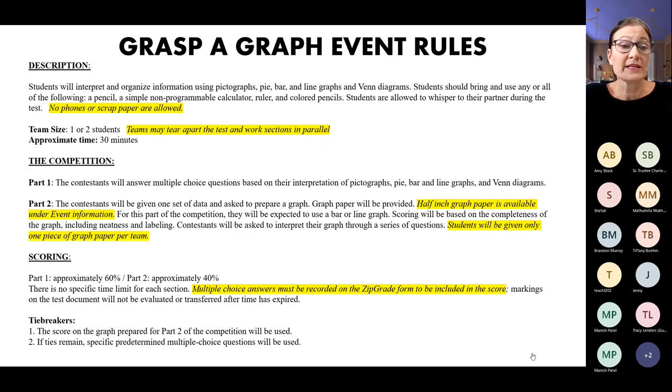Students are only going to be given one piece of graph paper per team, so they need to know if they make a mistake, what they're going to do, because they're only going to get that one piece. Scoring-wise, part one amounts to about 60 percent, and part two amounts to about 40 percent of the total score.